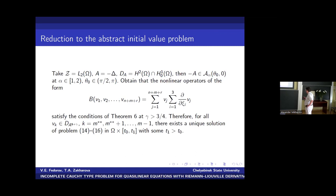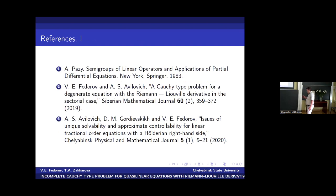From one as before, then there exists a unique solution of problem 14-16. Because this problem is reduced to the abstract Cauchy type problem for the quasilinear equation. And here the page on semigroups with results on the at the beginning of my talk about the first order equation. Here we study the operators Z_beta and their properties.